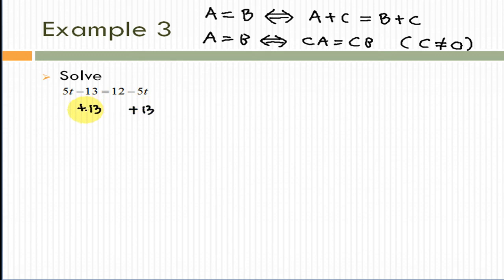After we add 13, this plus 13 and negative 13 will cancel each other. So this will be gone. Then we have a new equation, 5t equals 12 minus 5t plus 13. Let me go back here to the original equation.